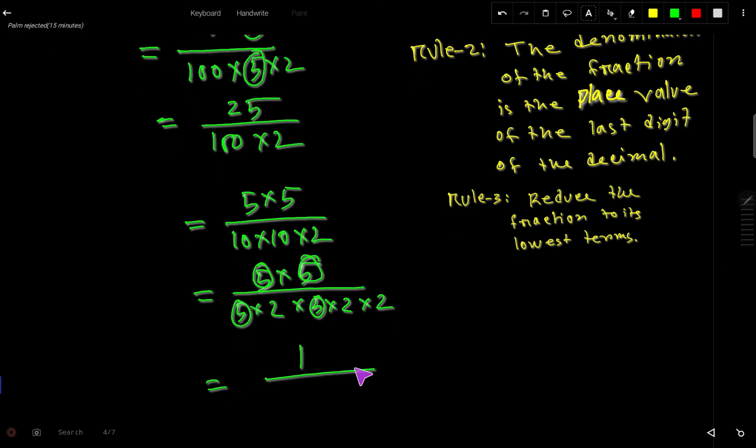We get 1 over 8. So 0.125 as a fraction is 1 over 8. This is the simplest form for this decimal.